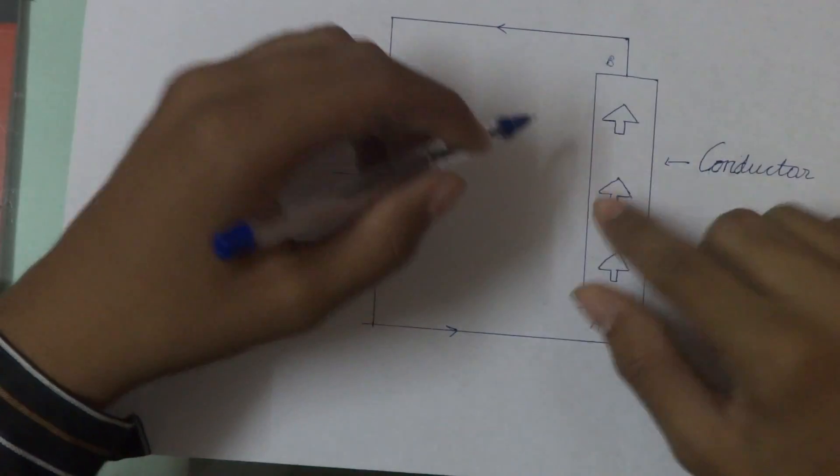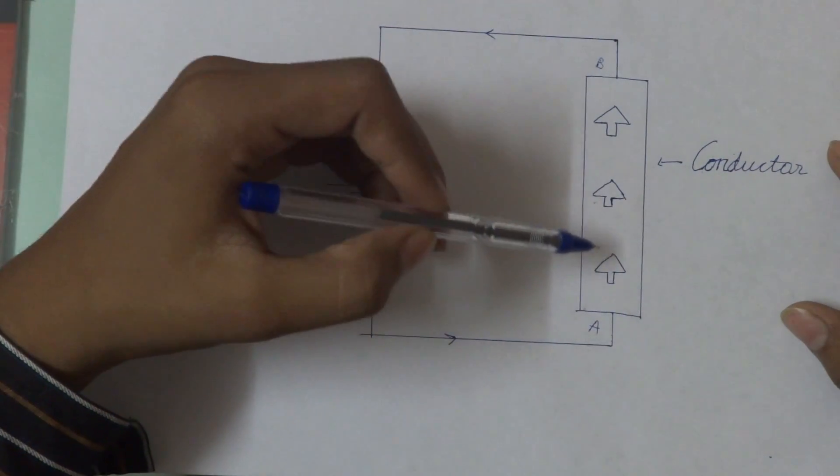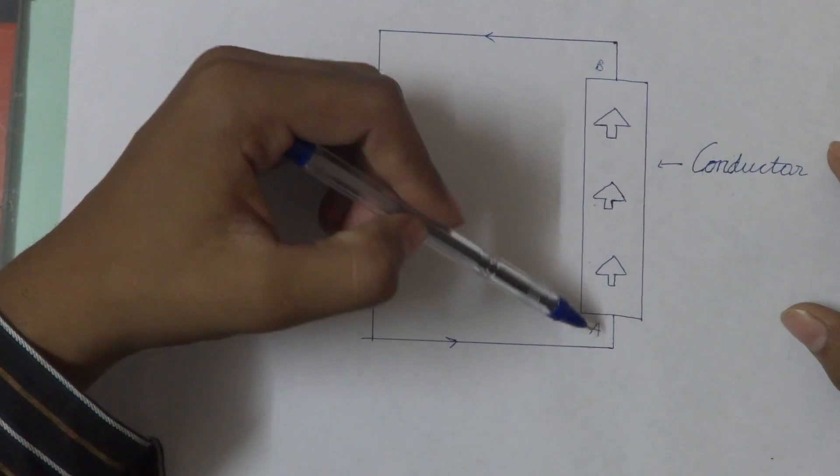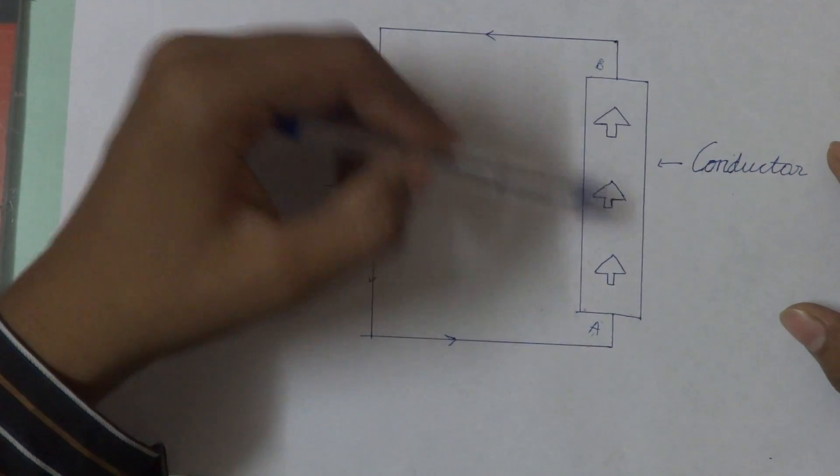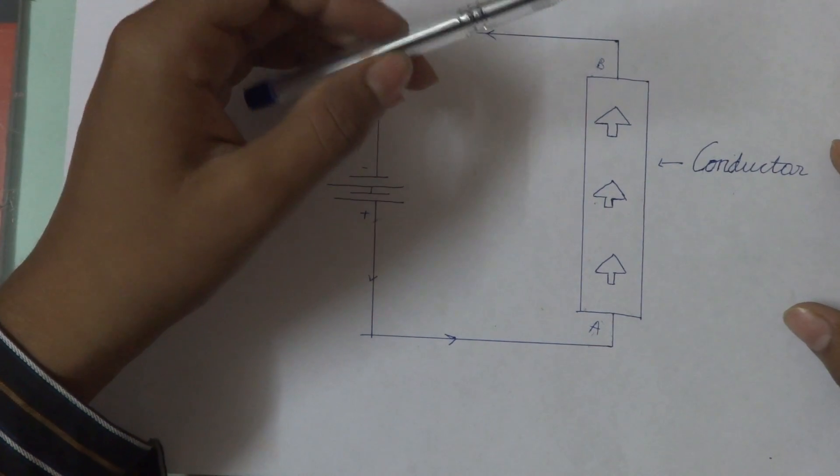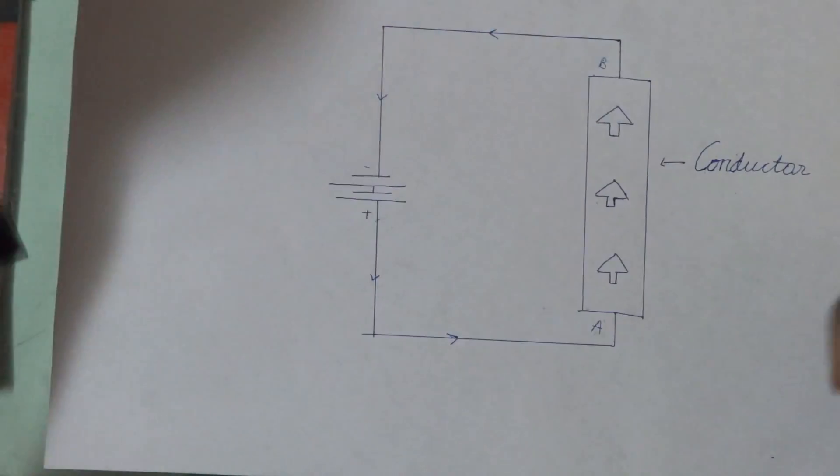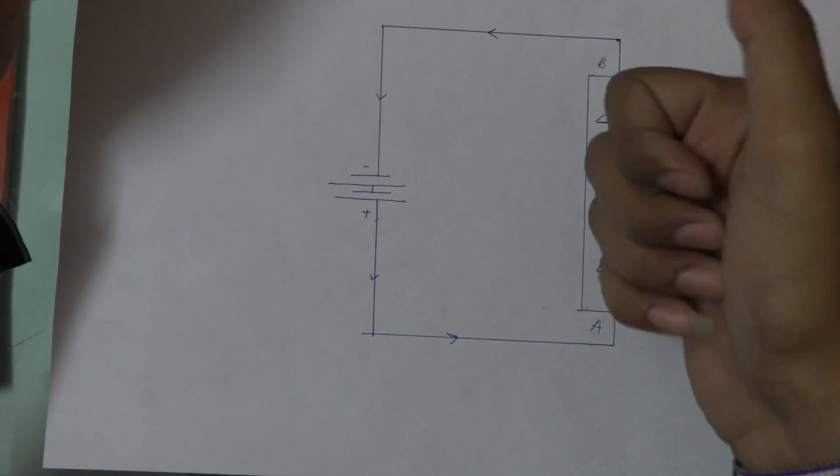In this case, in this conductor, the current is flowing from point A to B, that is in upward direction. So if we apply the right-hand thumb rule, then it is like this.